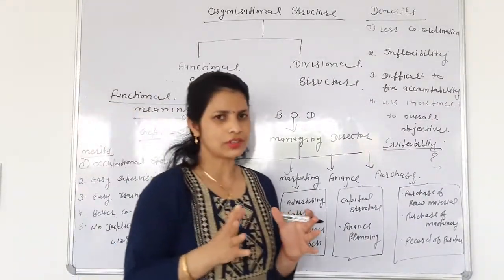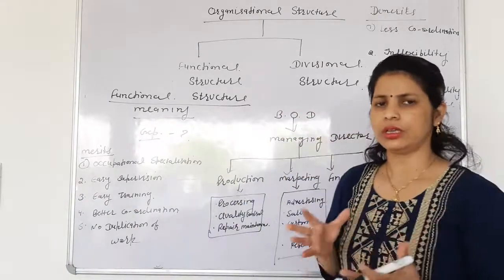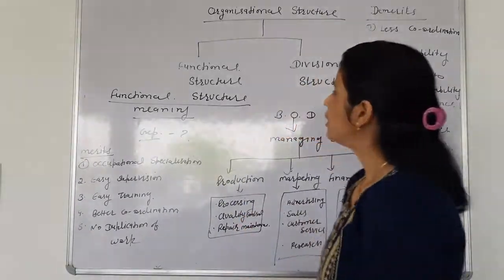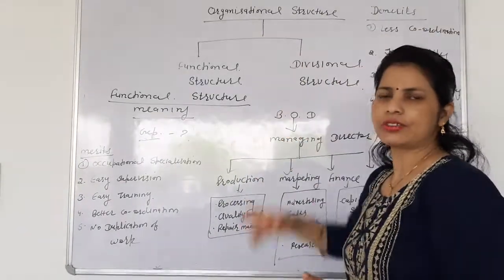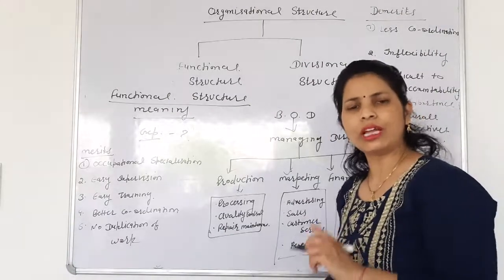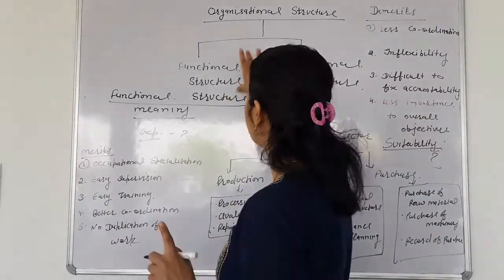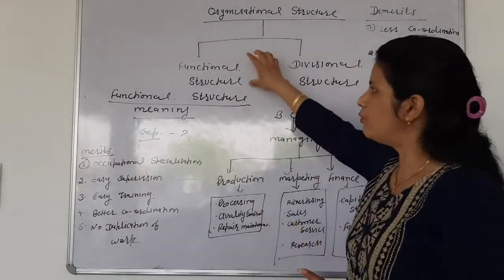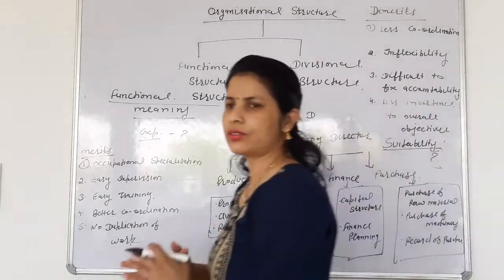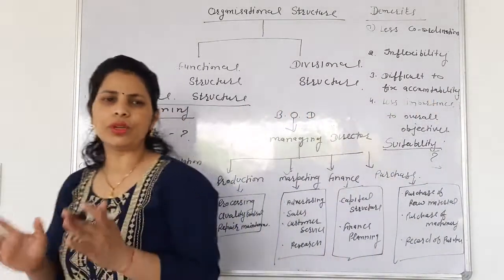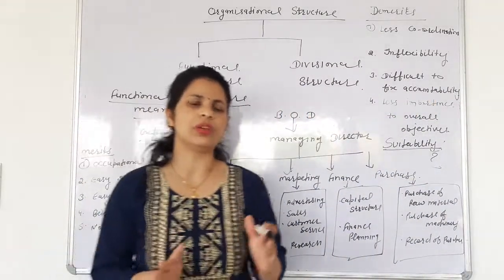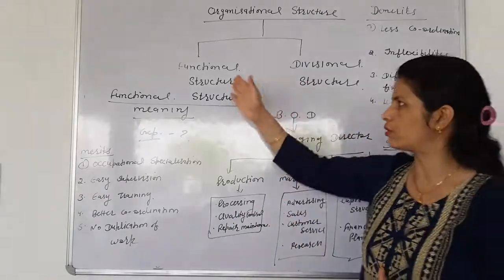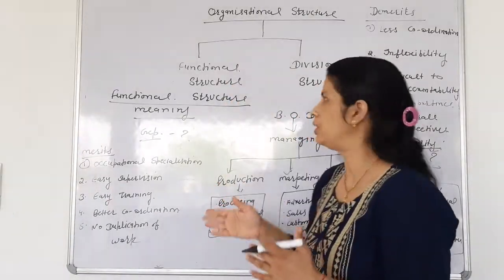Organizational structure ka meaning, uski importance, and types of organizational structure. Organizational structure has two types: functional and digital. Functional structure means that structure in which we make the departments in our organization on the behalf of functions and activity.